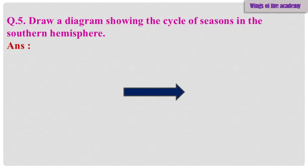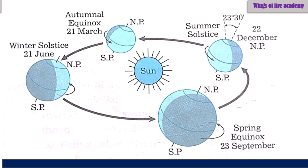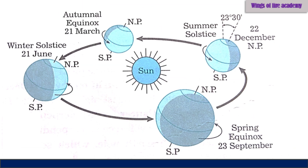Question 5: Draw a diagram showing the cycle of seasons in the Southern Hemisphere. Answer is given directly on the next slide.